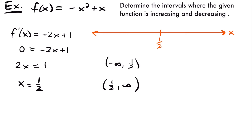To determine whether the function is increasing or decreasing on each interval, we pick a test value, plug it into our derivative, and check whether the slope is positive or negative. For the interval from negative infinity to 1 half, I'll pick x equals 0. Plugging into the derivative: negative 2 times 0 plus 1 equals 1, which is positive. So the function is increasing on this interval.